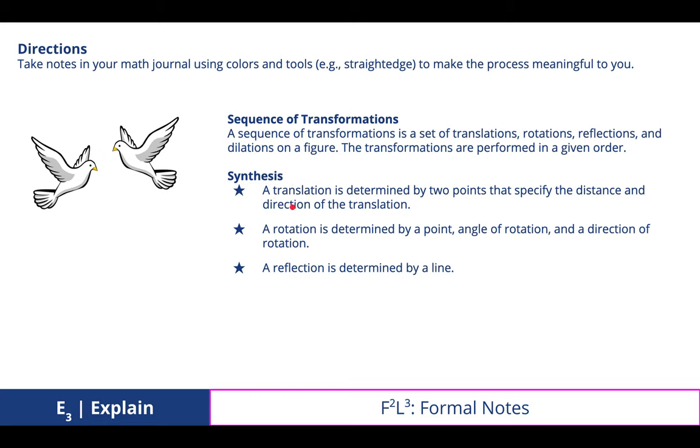And so we can synthesize the main parts that we need in order to conduct each of these transformations. So a translation is determined by two points that specify the distance and direction of the translation. A rotation is determined by a point, angle of rotation, and a direction of rotation, i.e. counterclockwise. And a reflection is determined by a line.